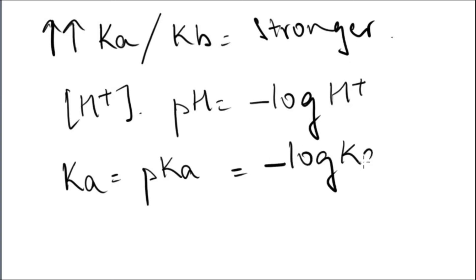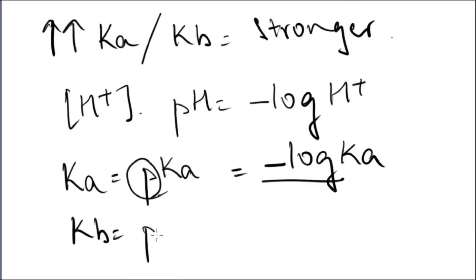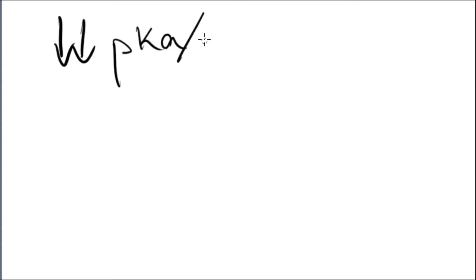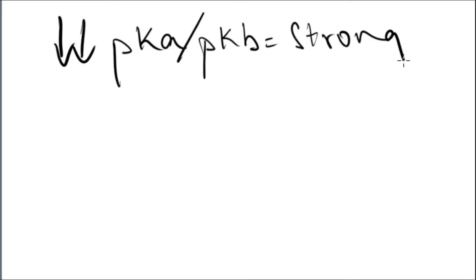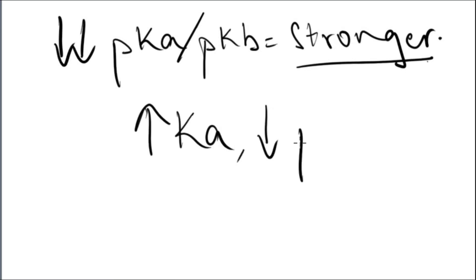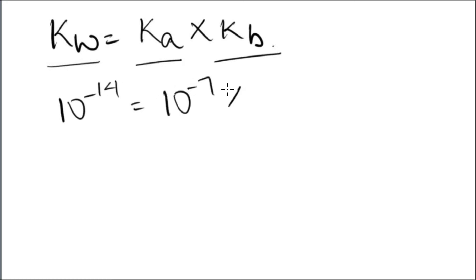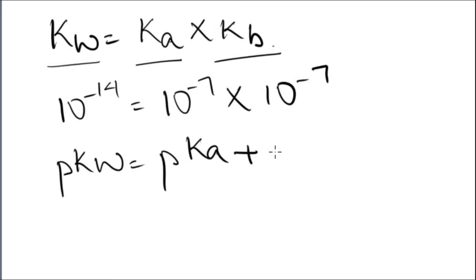pKa is the minus logarithm of Ka, and pKb is the minus logarithm of Kb. The smaller the pKa or pKb, the stronger the acid or base. Just like pkw equals pH plus pOH, Kw equals Ka times Kb, and pKw equals pKa plus pKb. We know Kw is 10 to the power minus 14, so pKw is 14, meaning Ka and Kb are each 10 to the minus 7, and pKa and pKb are each 7 under standard conditions.